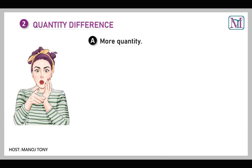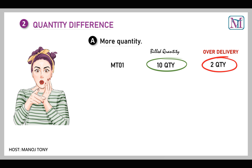The next scenario is quantity difference — more quantity. We will use material code MT01. We have billed 10 quantities to the customer, but 2 quantities are over-delivery. So by mistake we have charged for only 10 quantities, but we should have charged for 12 quantities. The correction quantity would be 12 (10 plus 2). So 2,000 rupees will be additionally charged from the customer.